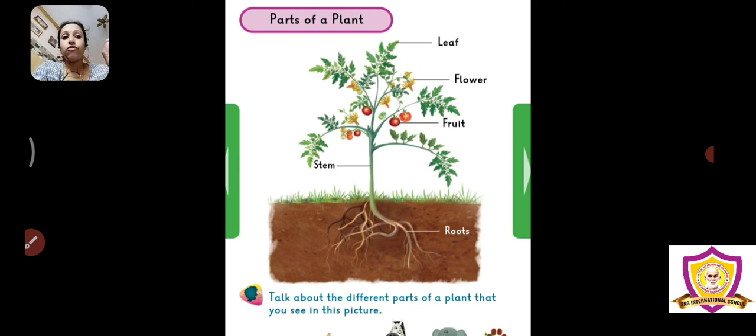Leaf prepares the food with the help of sunlight. When there is sunlight, the leaf will prepare the food. And then the fruits come.